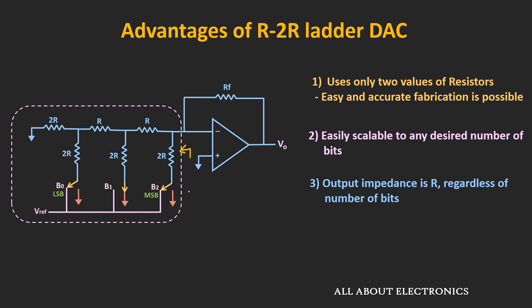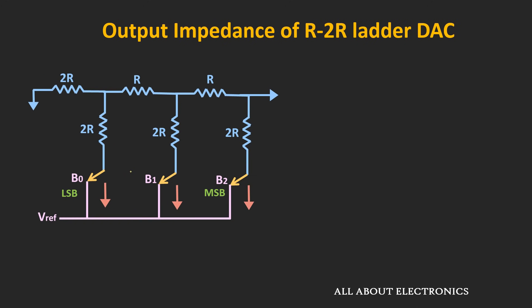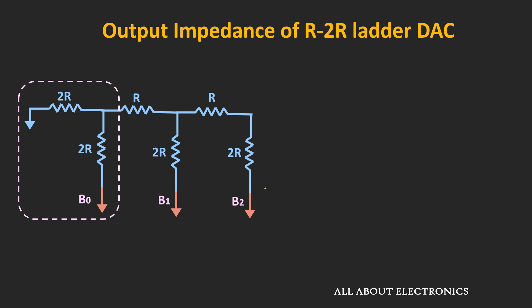Before we move ahead, let me show you how the output impedance of this ladder network is equal to R. We will find the output impedance for this 3-bit ladder network. To find the equivalent resistance, let us assume all sources are zero, meaning all resistors are connected to the ground terminal. After connecting all resistors to ground, these two resistors are connected in parallel, so their equivalent resistance R_eq will be equal to 2R in parallel with 2R, which equals R.